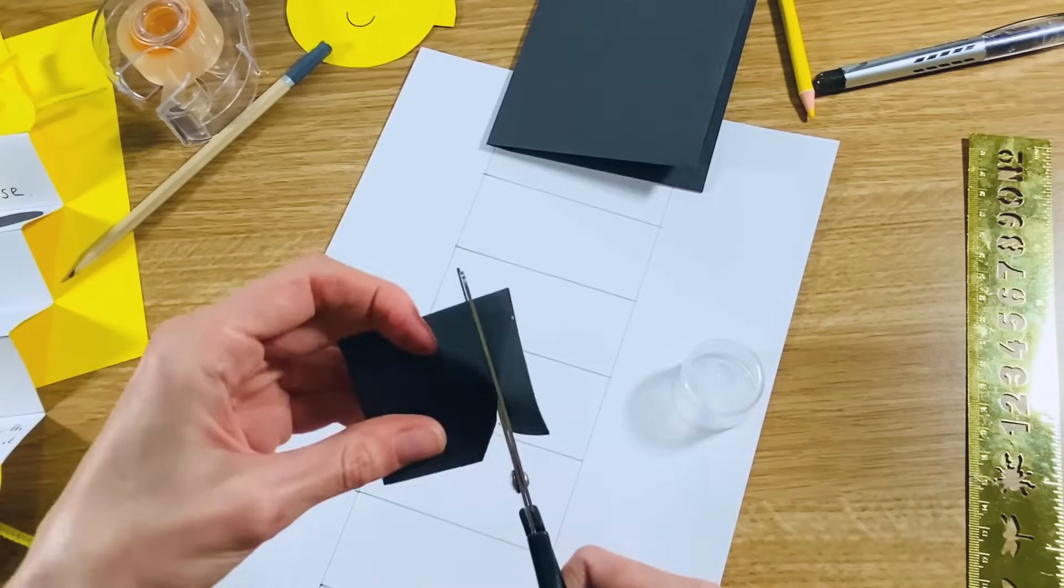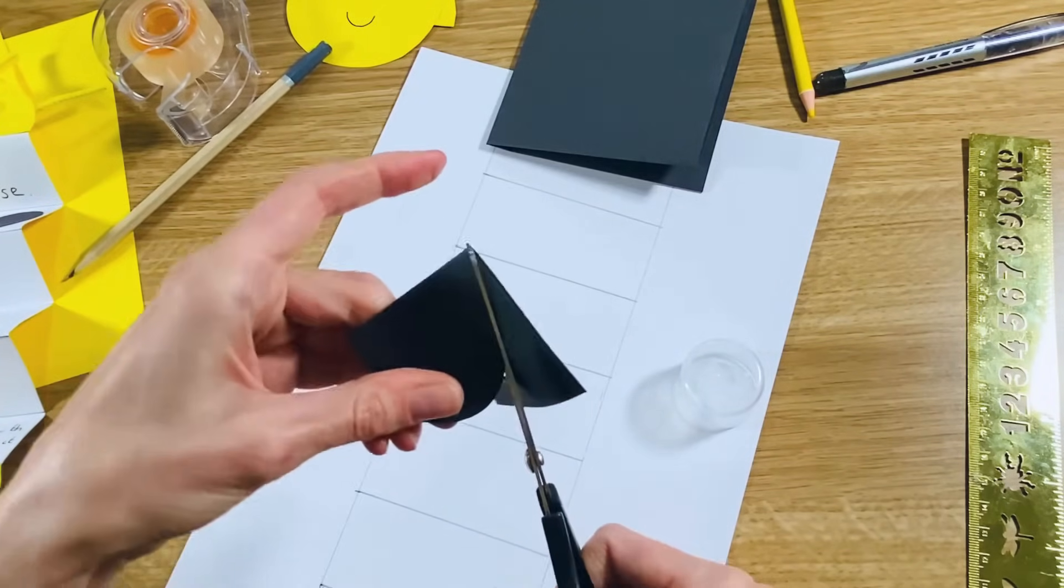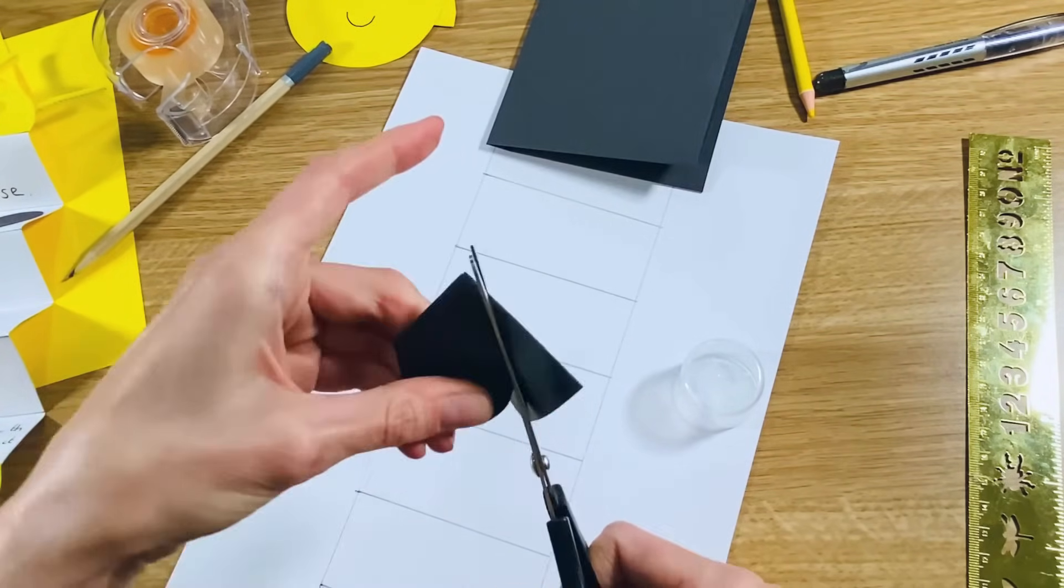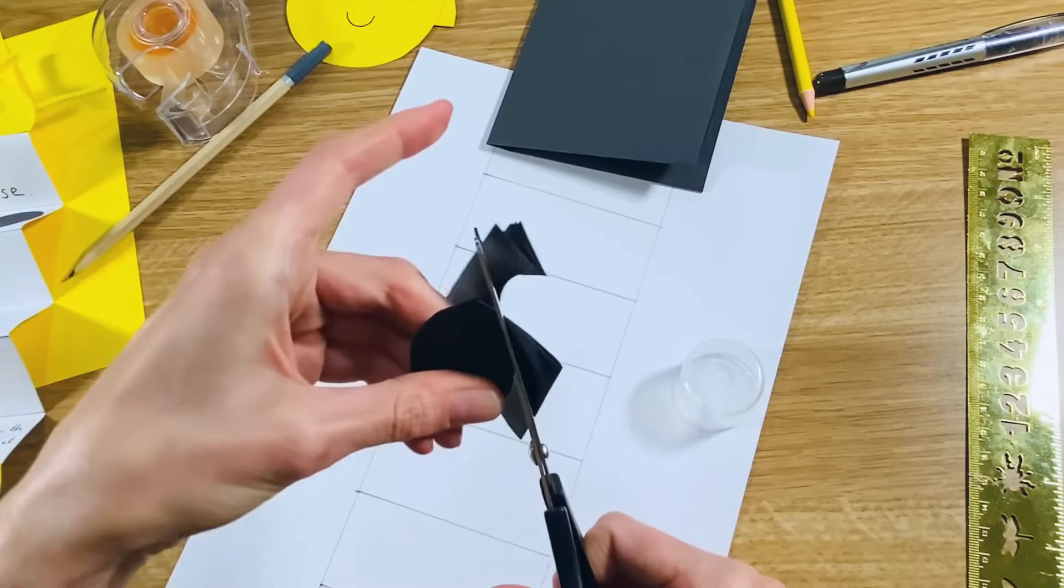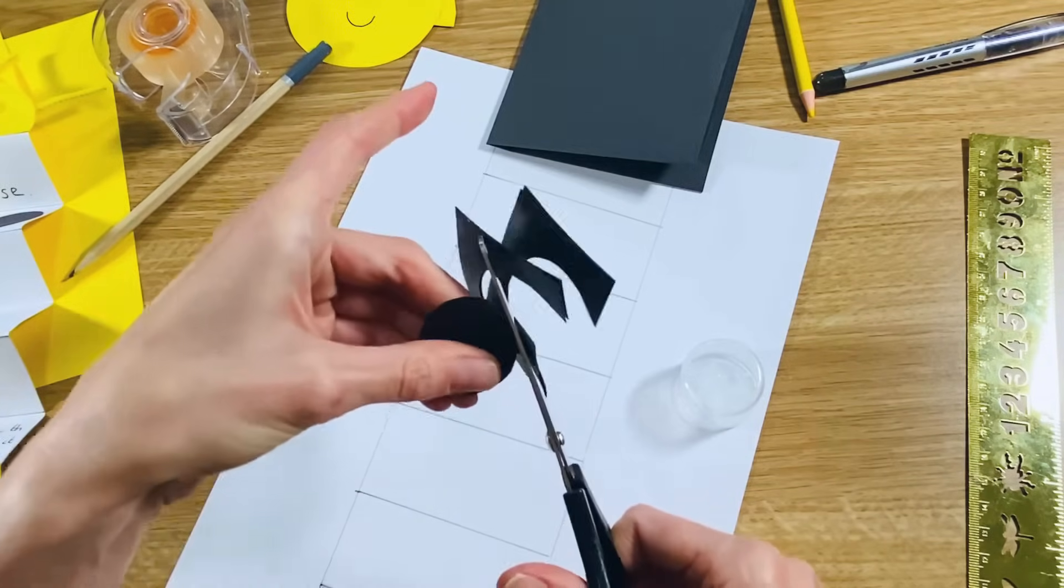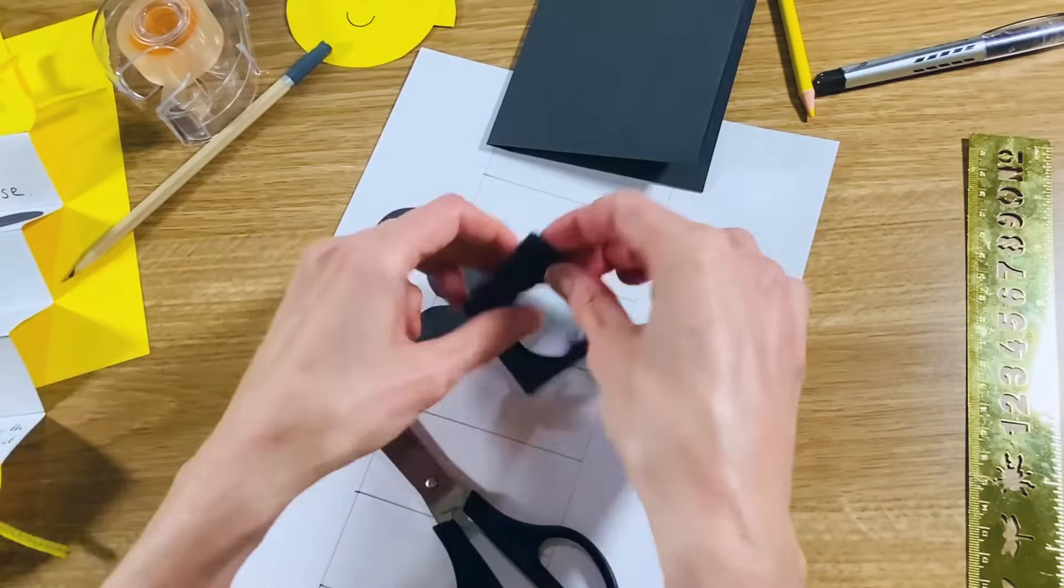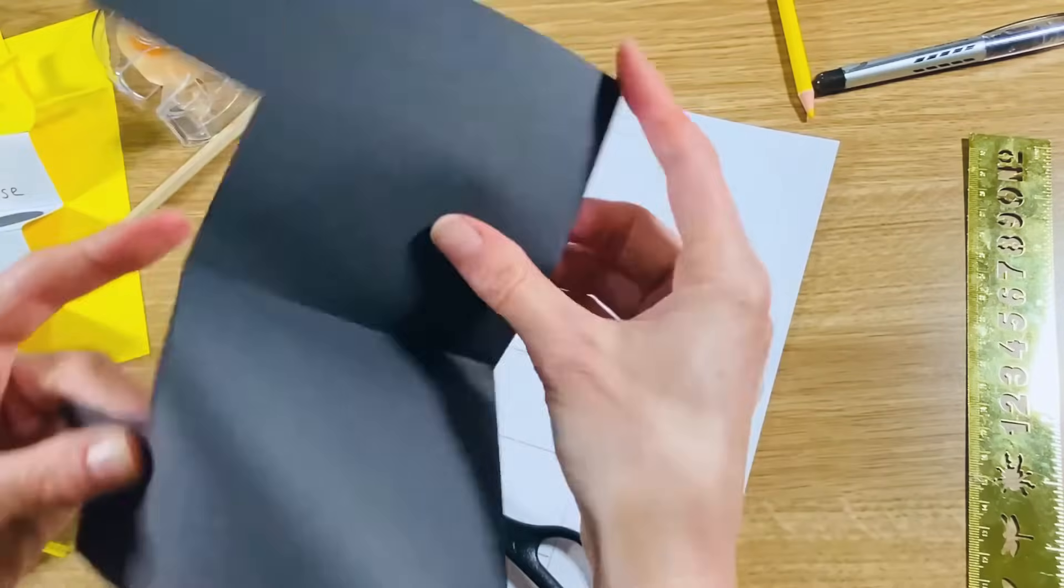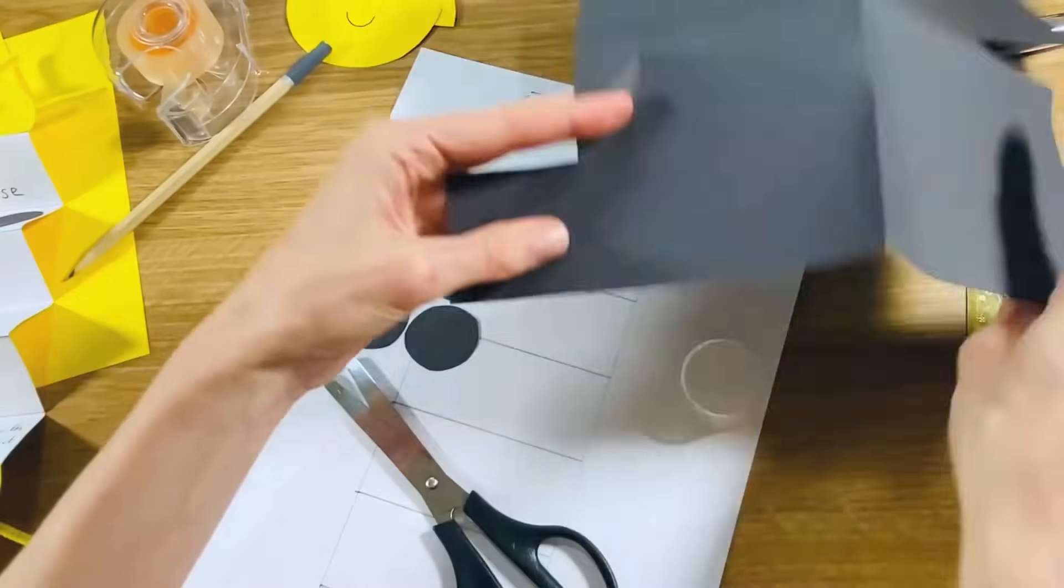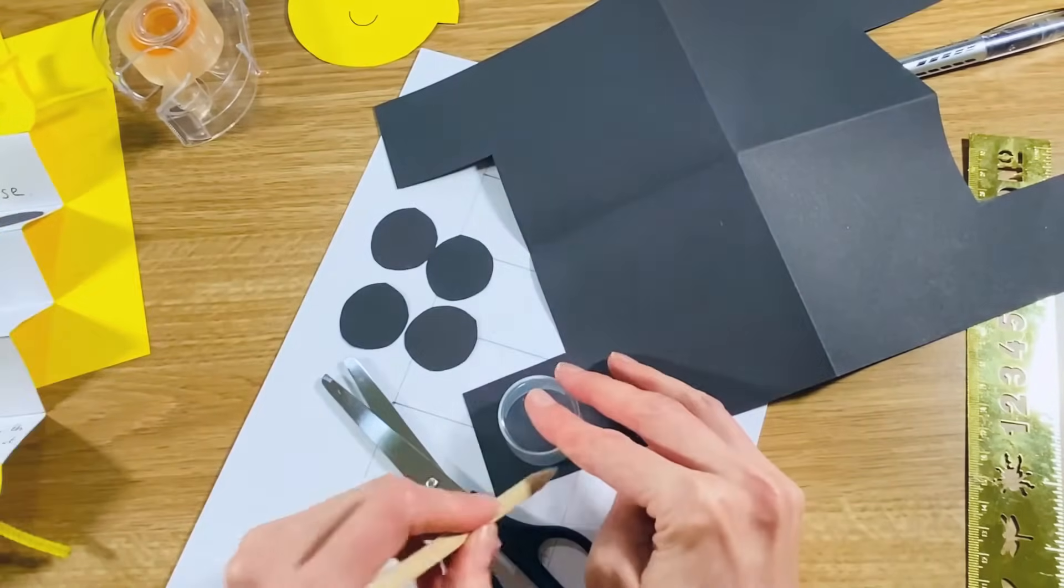And then cut around the circle that I've drawn. So these are going to be my moons. And because I folded the paper I've got four of them rather than just one, but I need five, so I'm just going to do one more on the end there.